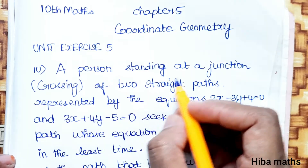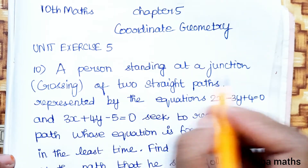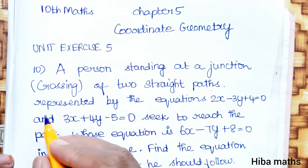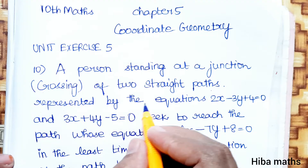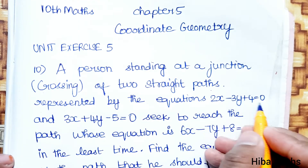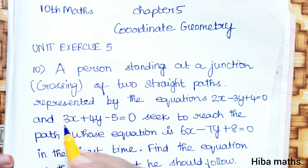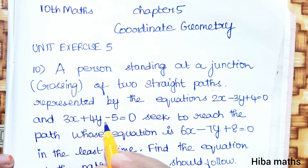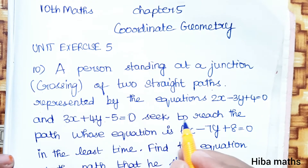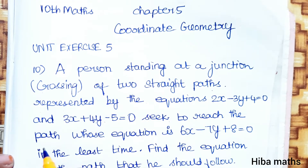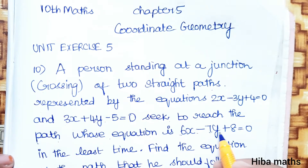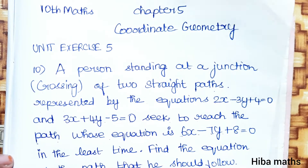A person standing at a junction, above the crossing of two straight paths, represented by the equations 2x minus 3y plus 4 equal to 0, and 3x plus 4y minus 5 equal to 0, seeks to reach the path whose equation is 6x minus 7y plus 8 equal to 0.